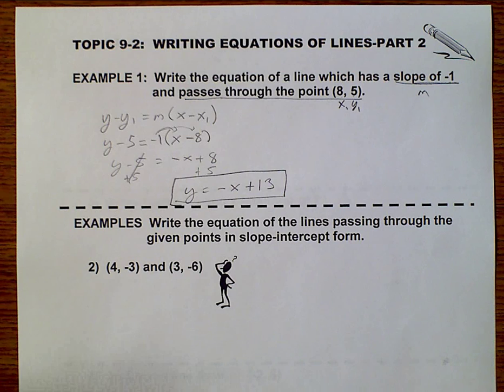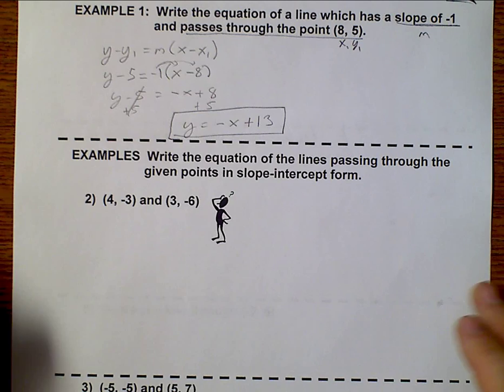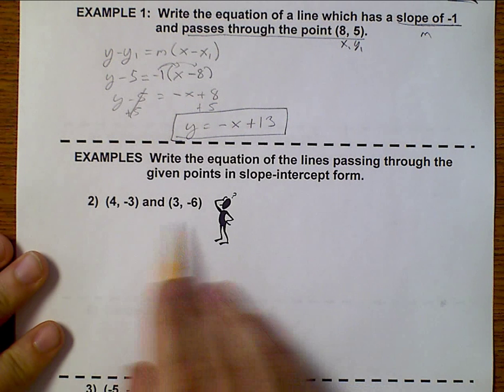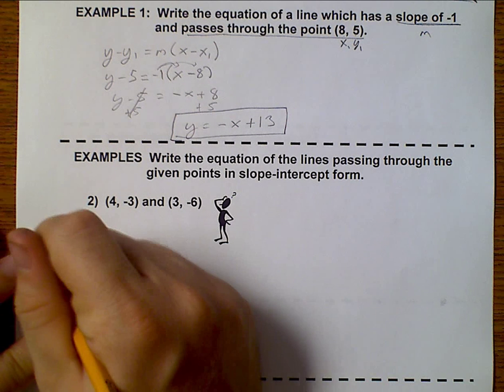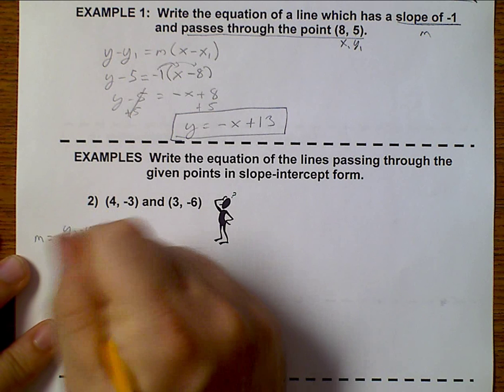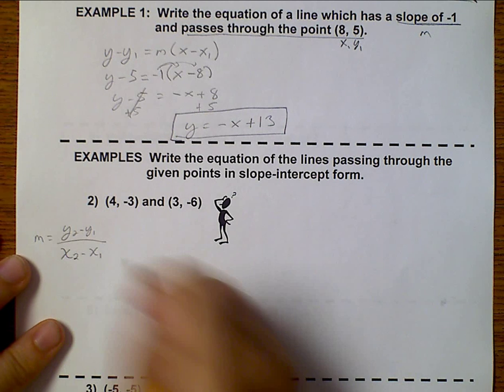Now, sometimes, instead of being given a slope and a point, we are just given two points. And so we need to figure out what our slope is. Remember that m is the change in y, so y2 minus y1, over the change in x. So it would be x2 minus x1.